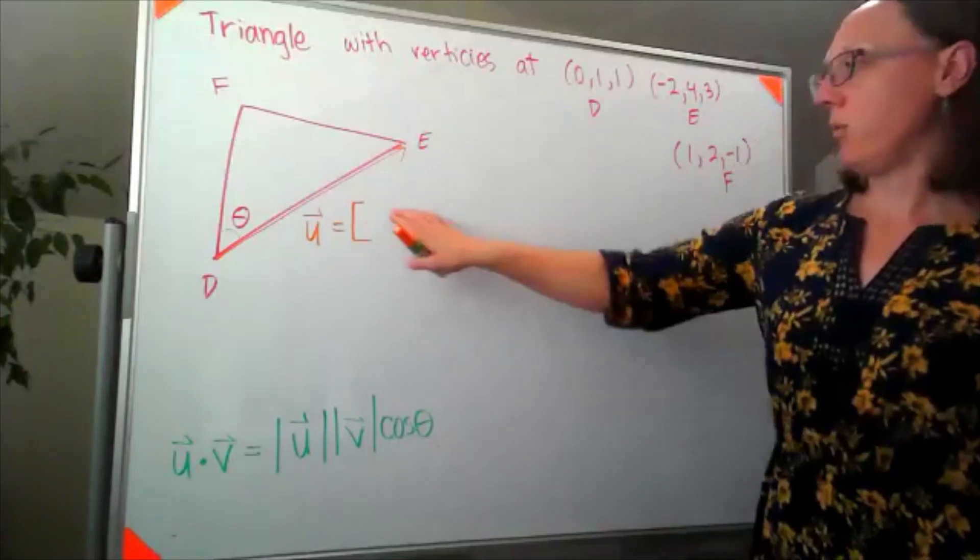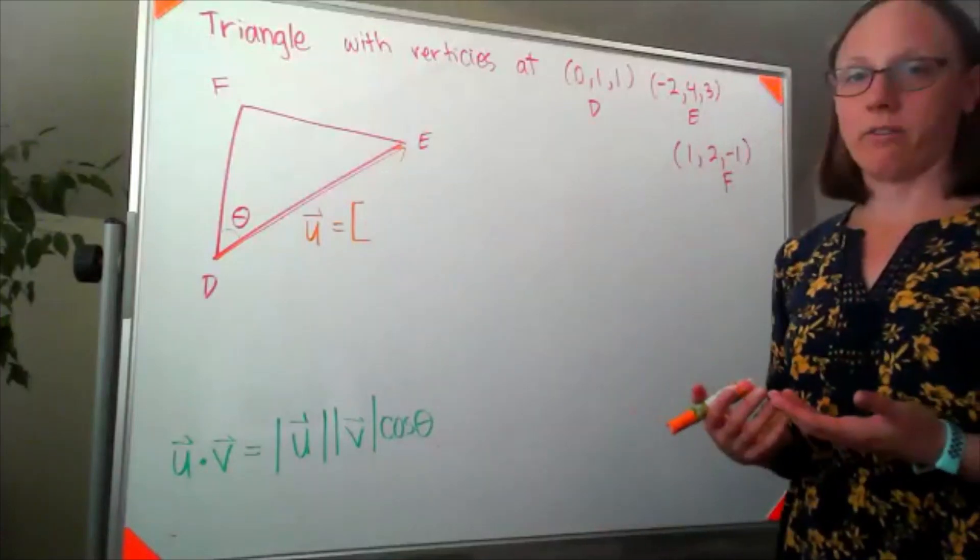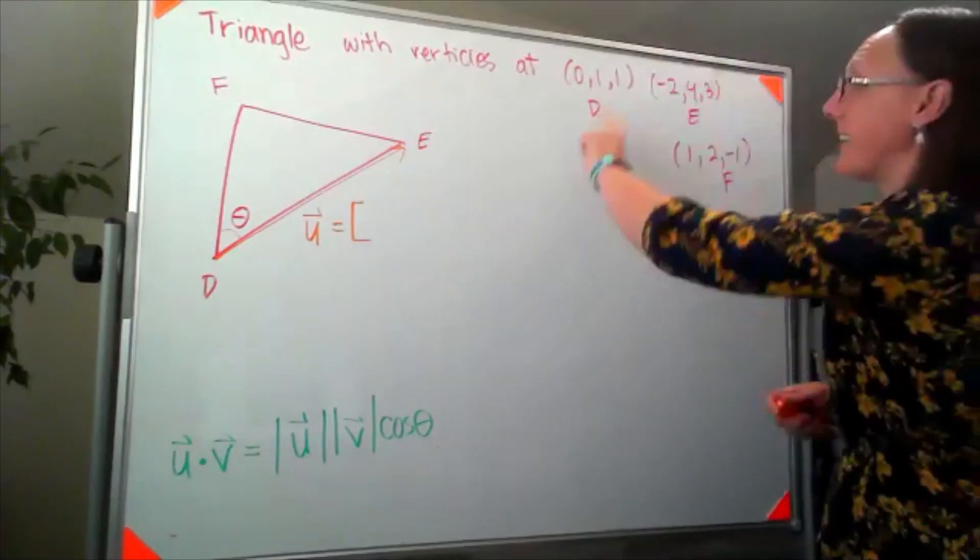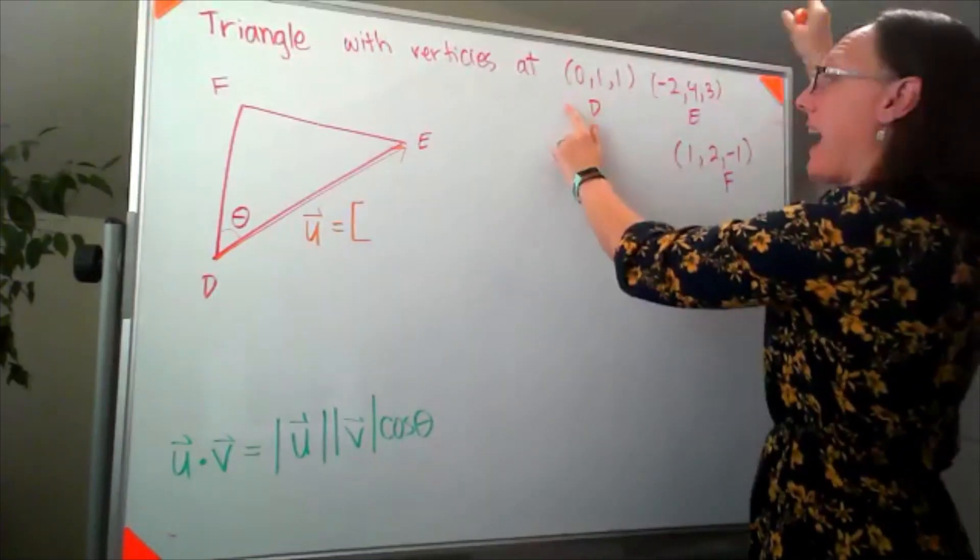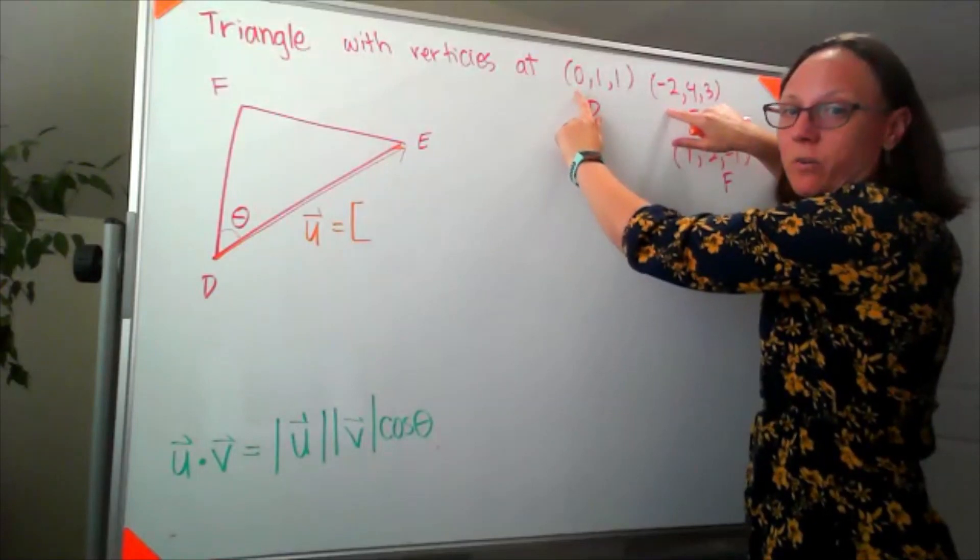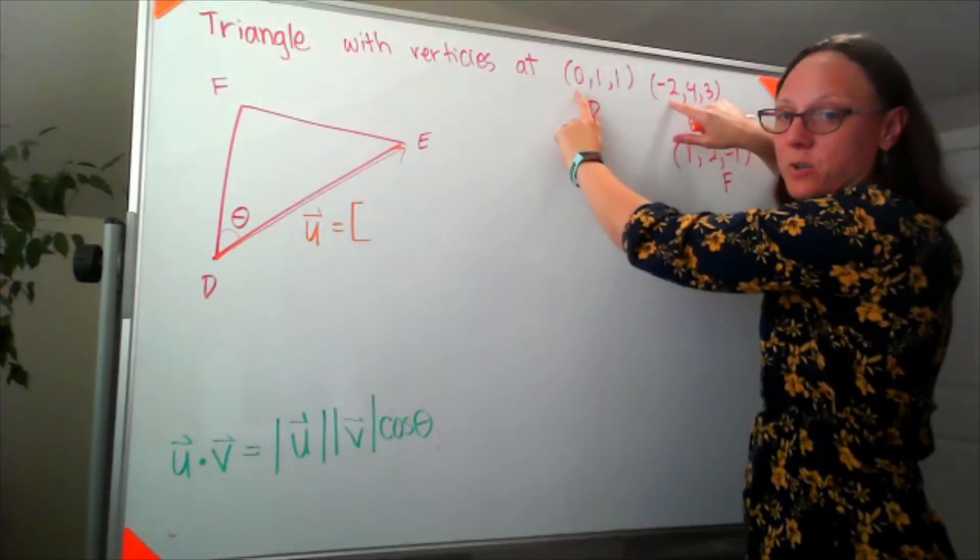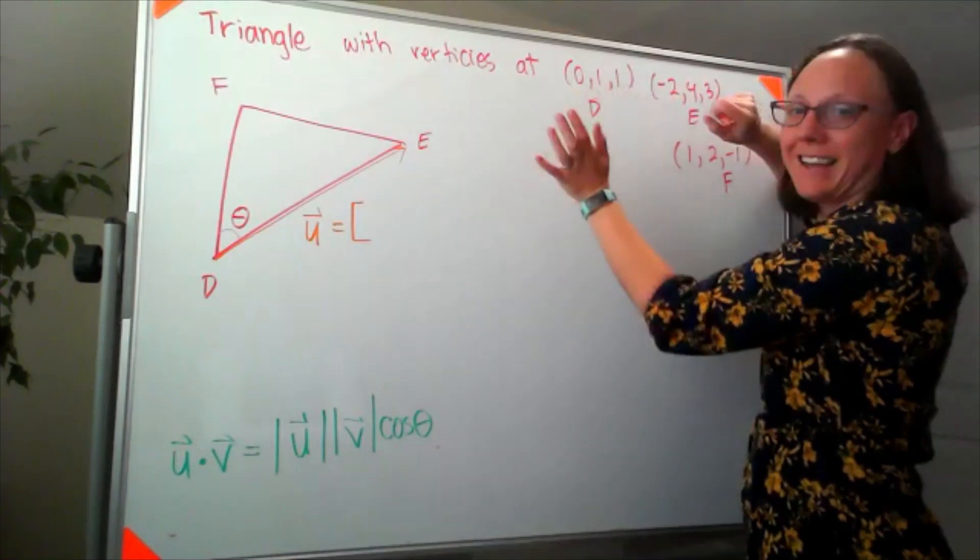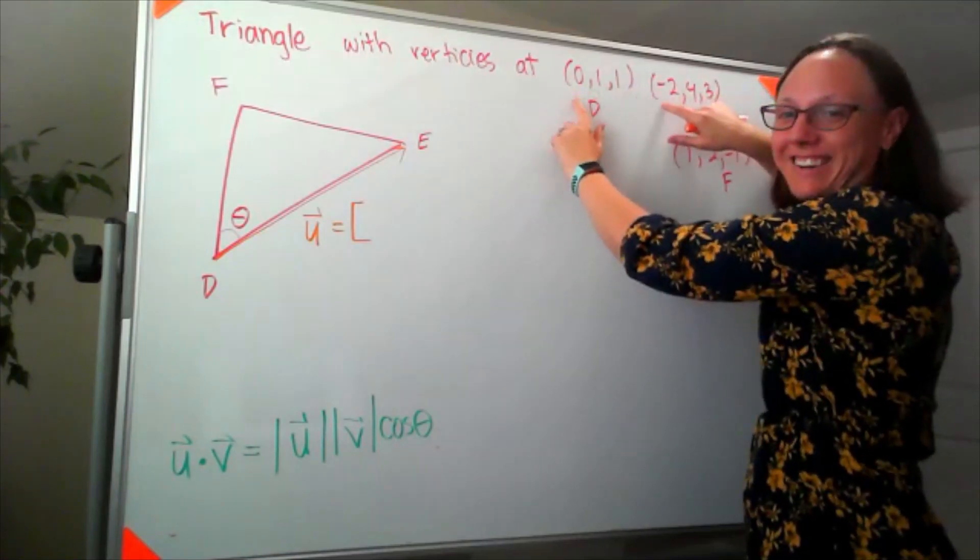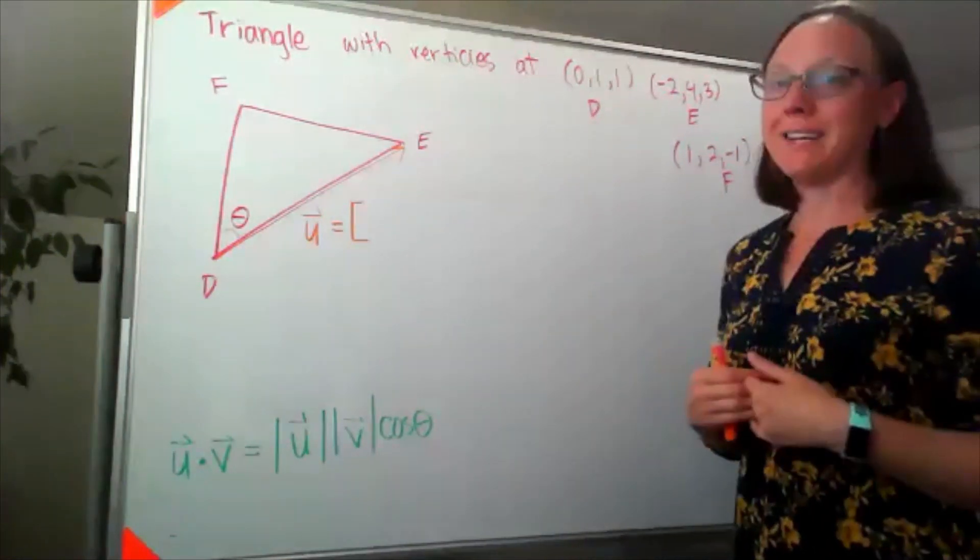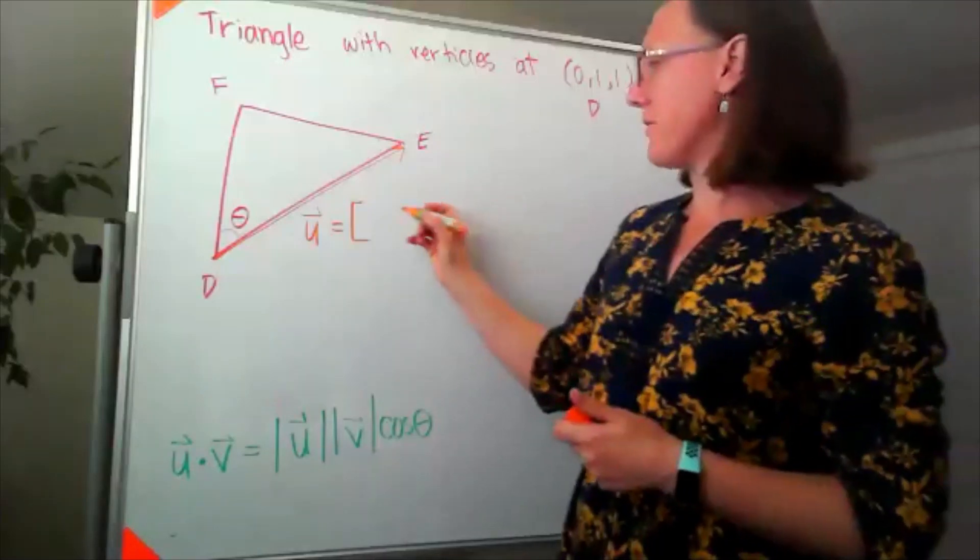So to figure out what our first component for that row vector is, I want to think about I'm standing at the point D and I have to get to the point E. So if I'm standing in an x value of zero and I have to get to an x value of negative two, then I need to move or be displaced negative two.